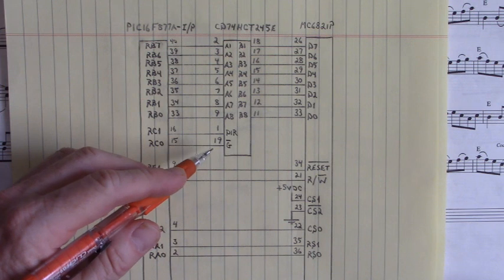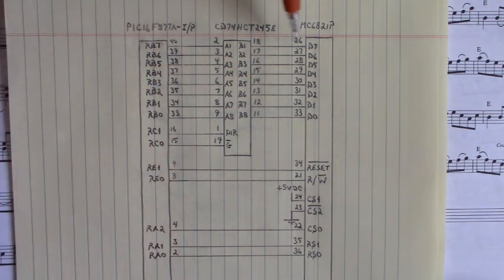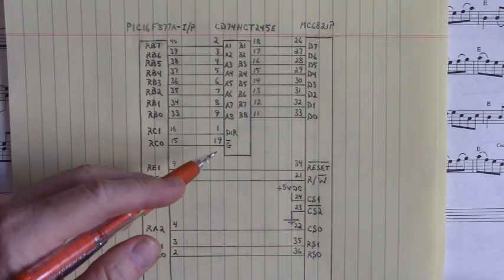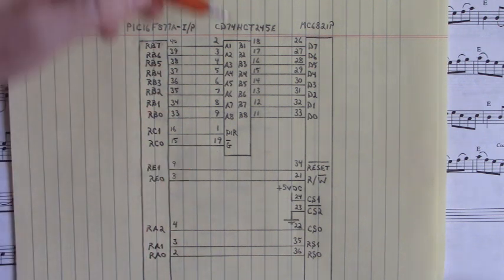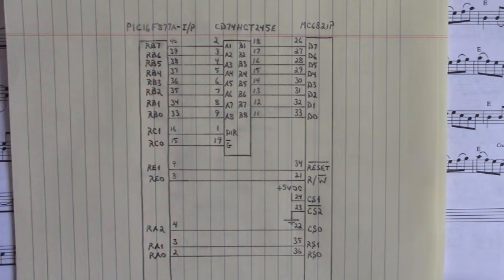When G-bar is low, we have data transfer. When G-bar is high, we're in tri-state.